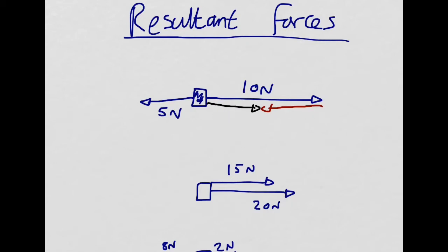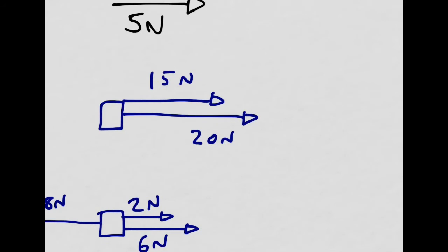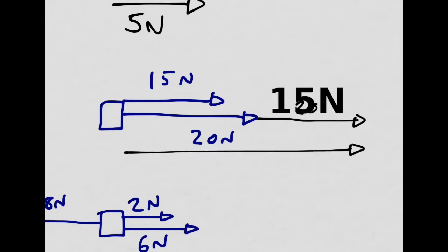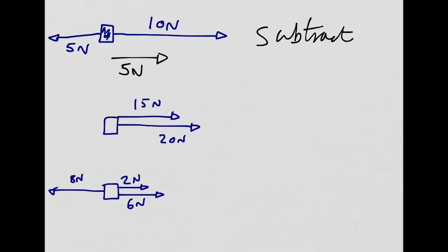If I want to find a resultant force of two forces acting in opposite directions, I simply have to subtract them. So this has a resultant force of 5 newtons to the right. You subtract for forces acting in opposite directions. Forces acting in the same direction — if I move the 15 newton arrow to the end of the 20 newton arrow, I'm going to end up with a resultant force of 35 newtons to the right. A big resultant force to the right. So if they're acting in the same direction, you have to add them.